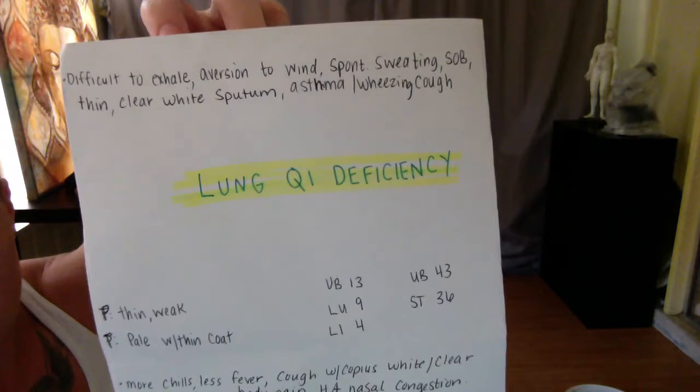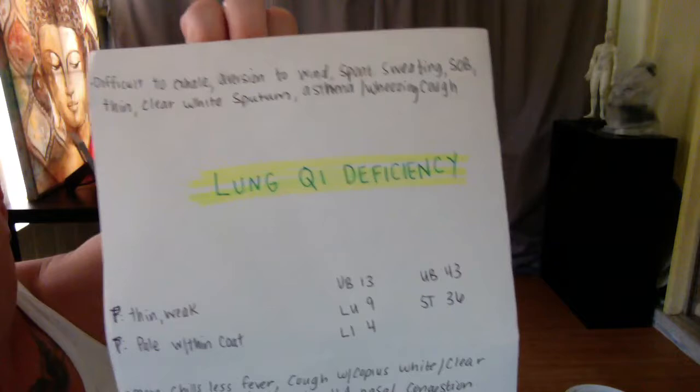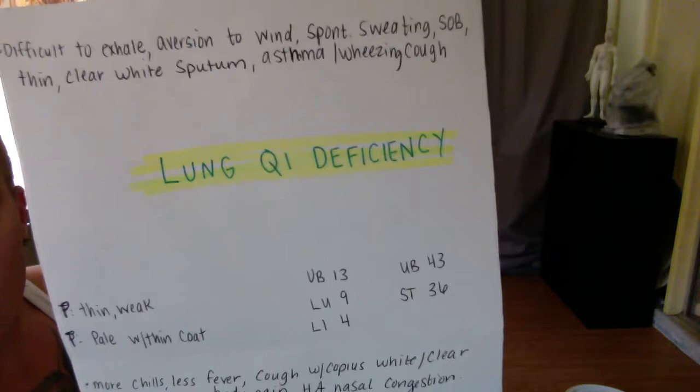Lung Chi deficiency: difficult to exhale, aversion to wind, spontaneous sweating, shortness of breath, thin clear white sputum, asthma, wheezing cough.